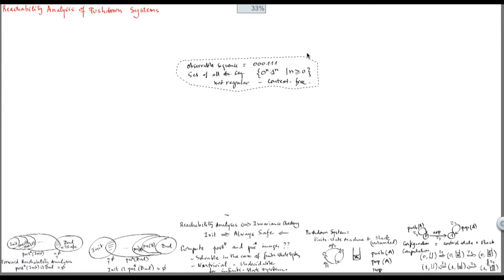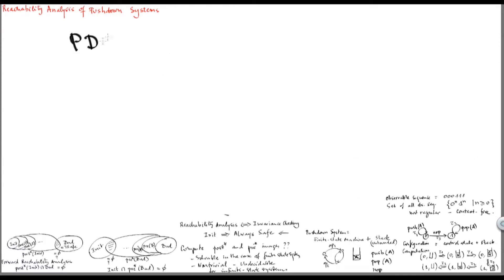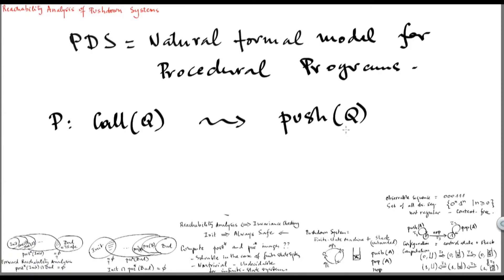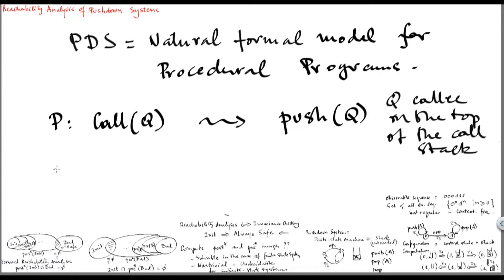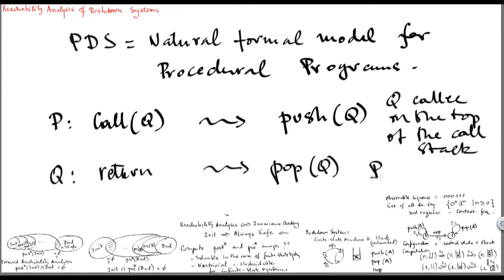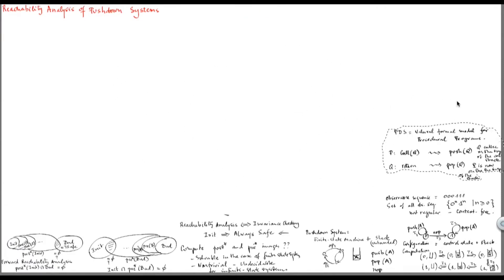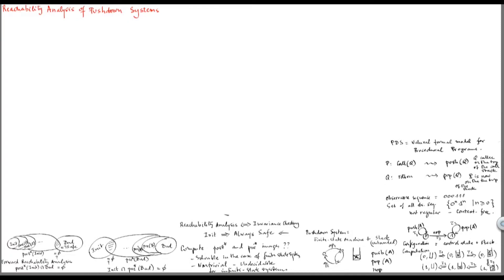We are interested in this because pushdown systems can be used as a natural model for sequential programs with recursive procedure calls. Intuitively, if a procedure P calls another procedure Q, this corresponds to a push Q operation — putting Q, the callee, on top of the call stack. When Q returns, this corresponds to a pop operation, and then the caller P is on top of the stack. To verify this kind of programs, it's natural to use pushdown systems as formal models and ask reachability questions to verify safety properties about them.